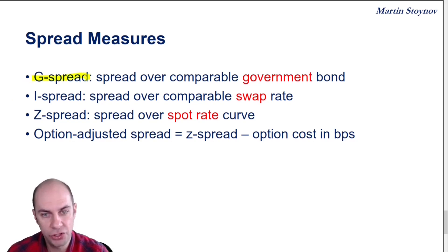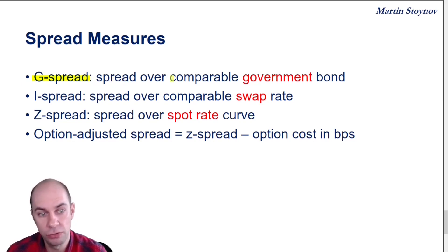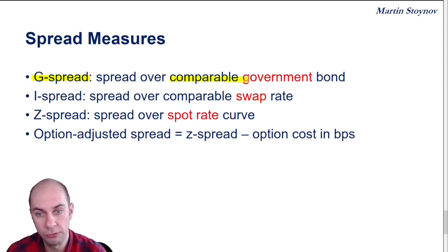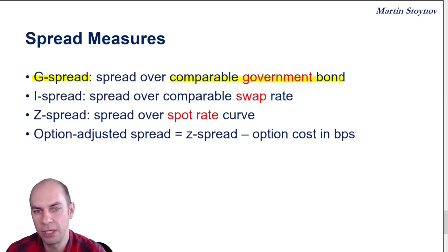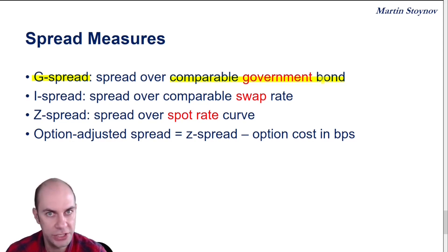Here's the G spread. G here stands for government. So it is the yield differential between the yield of the corporate security and a comparable government security. What we mean by comparable is maturity has to match. That's the G spread.